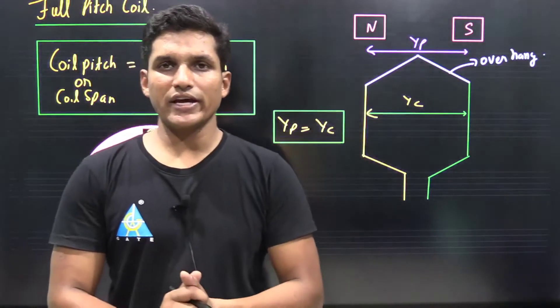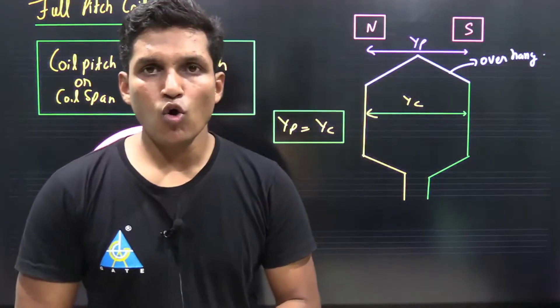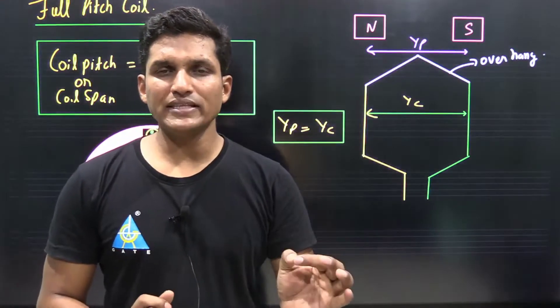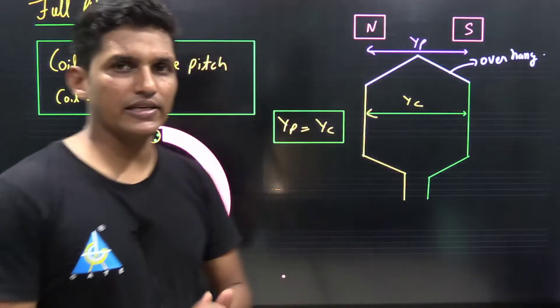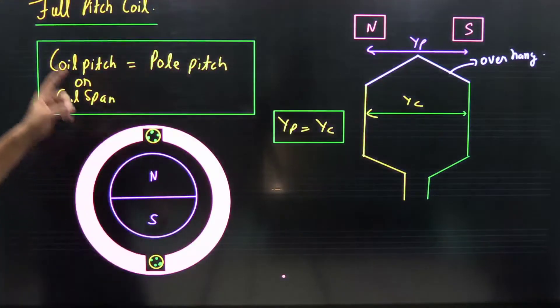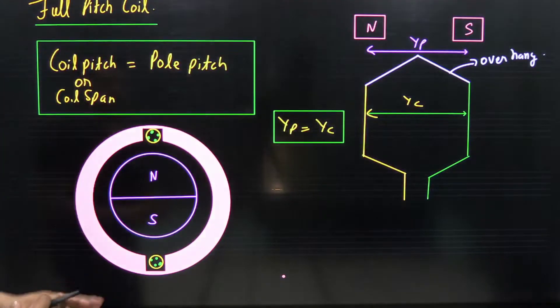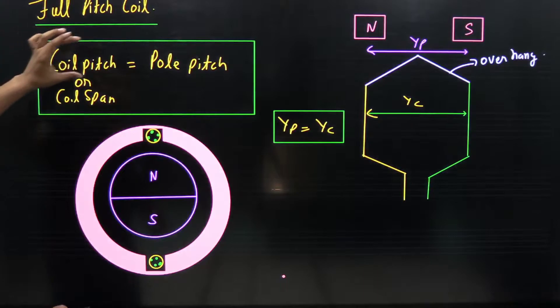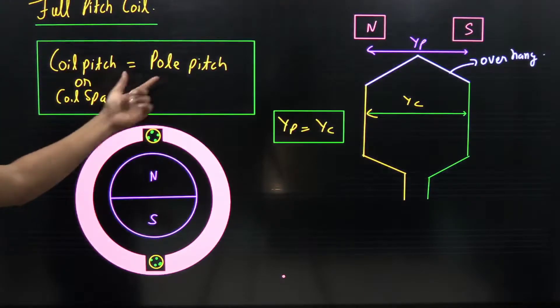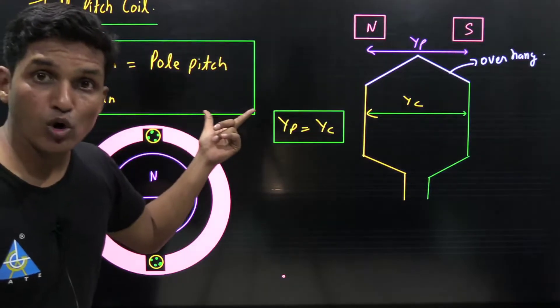Hello everyone, welcome to Gate Academy. What is full pitch and short pitch coil? In a full pitch coil, the coil pitch or coil span is equal to pole pitch.